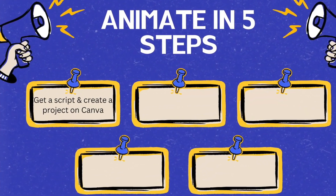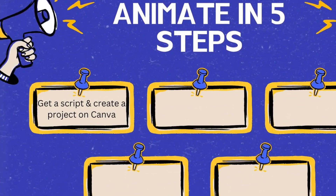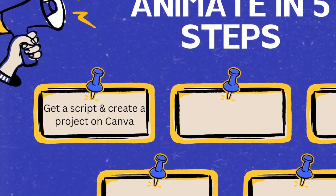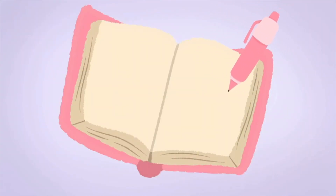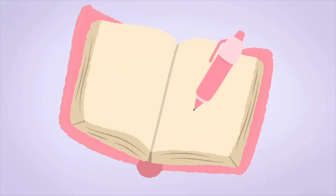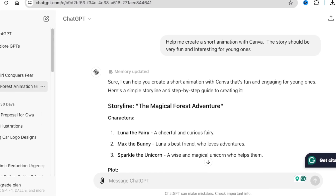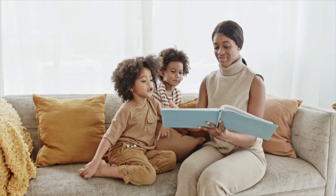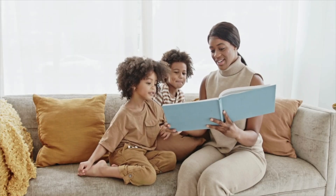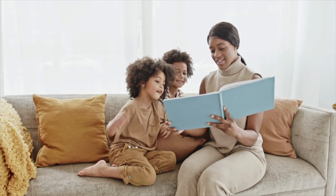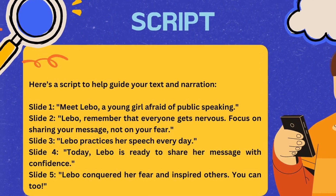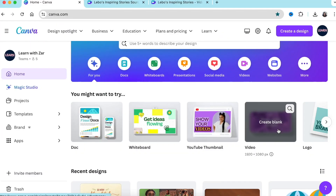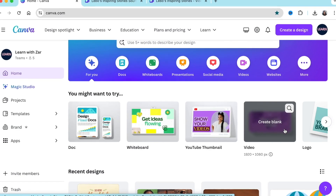To create this illusion of animation, we're going to do it in five steps. Step number one is to get a very good script — whether you use ChatGPT, write it yourself, or ask your kids to come up with a story that kids are going to love.